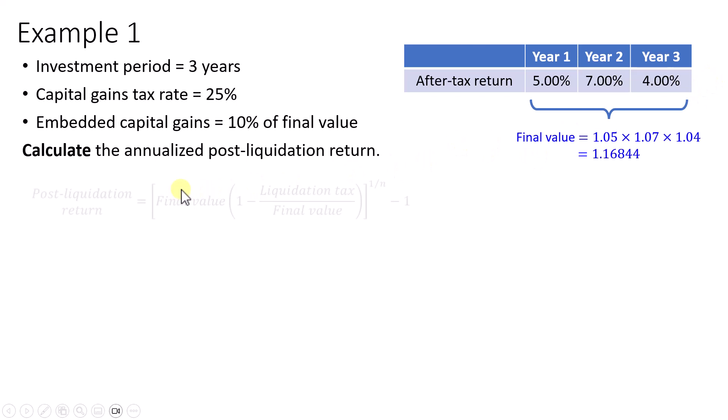To get the annualized post-liquidation return, we would take the final value and multiply by one minus the liquidation tax over the final value, then raise it to the power of one over n minus one, where n is the investment period which is three years.